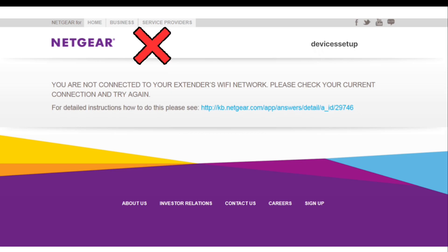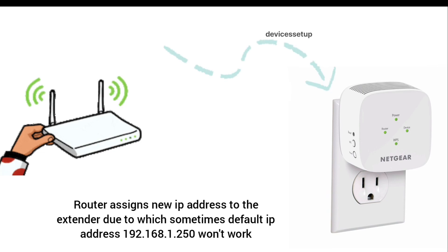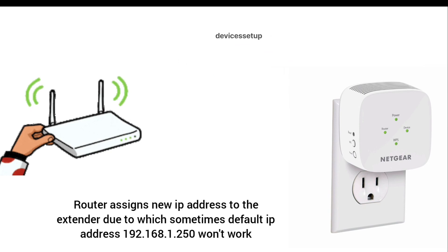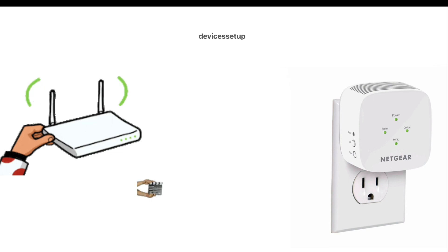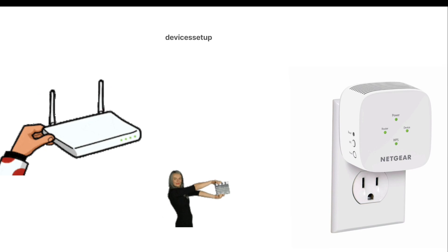The router assigns a new IP address to the extender, due to which the default IP address of the extender — 192.168.1.250 — might not work. So let's learn how to find the extender's new IP address.